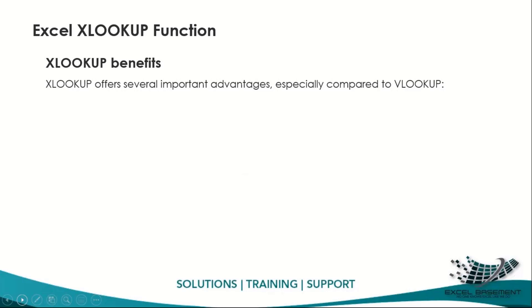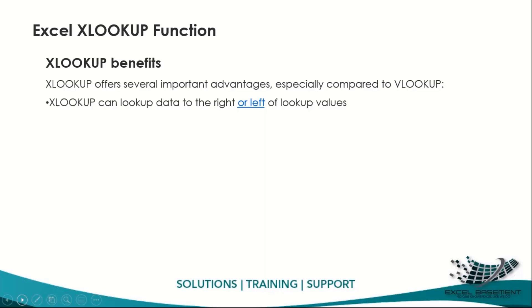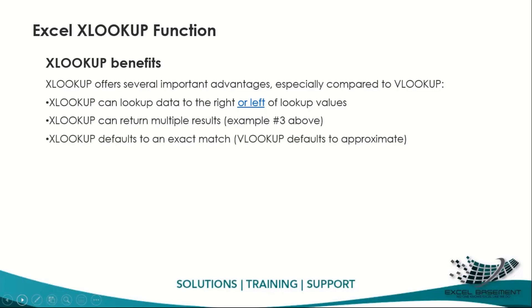The key benefits of XLOOKUP over VLOOKUP include: XLOOKUP can look up data to the right or left of lookup values, whereas VLOOKUP only works left to right. XLOOKUP can return multiple results, similar to INDEX-MATCH. XLOOKUP defaults to exact match, whereas VLOOKUP defaults to approximate match.